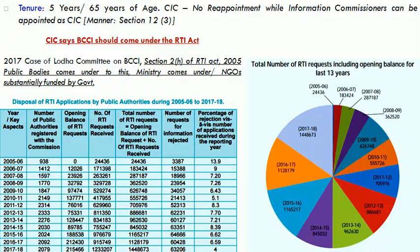Regarding tenure: it is 5 years or until the age of 65, whichever is earlier. If someone is 62 years old, their tenure will be 3 years. The Chief Information Commissioner, once the tenure is completed, cannot be reappointed. However, an Information Commissioner can be promoted to CIC. This has been given in Section 12, subsection 3 of the RTI Act.